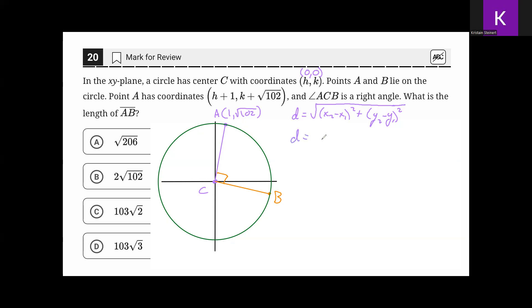Substituting the appropriate values into the formula yields 1 minus 0 squared plus the square root of 102 minus 0 squared, which simplifies to the square root of 1 plus 102, which is the square root of 103.